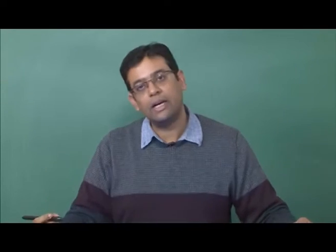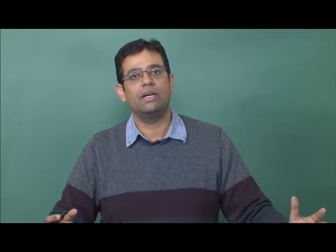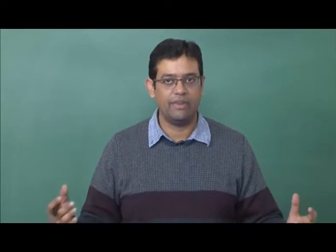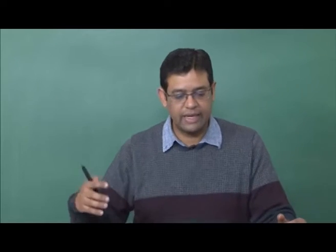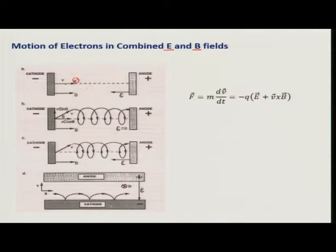Since we know that plasma consists of electrons, ions and neutral species, we should also expect that these will respond to externally applied electric and magnetic fields. In this slide, I am discussing motion of electrons in combined electric and magnetic field. As you see in this figure, if an electron has velocity parallel to the direction of electric field, it will be accelerated towards the anode. There will be acceleration and force in the same direction on the electron.